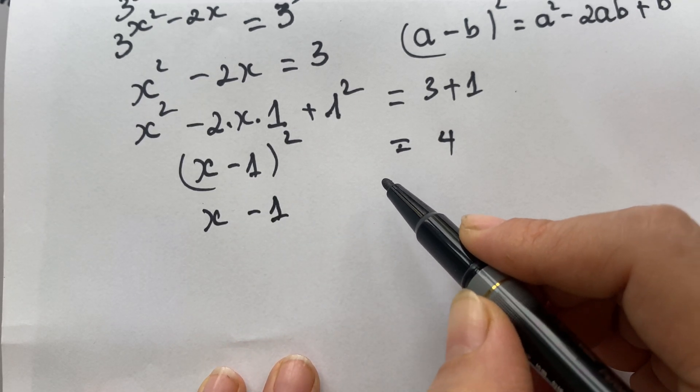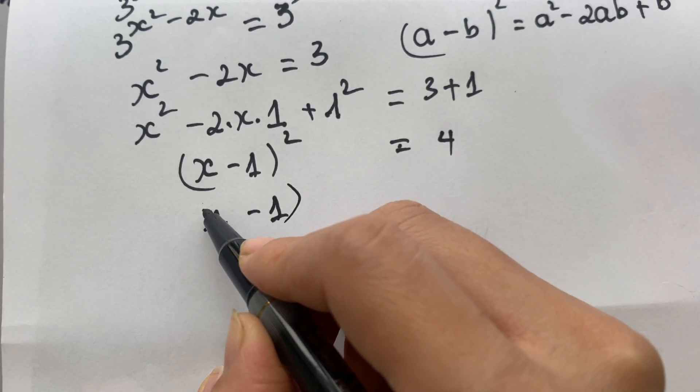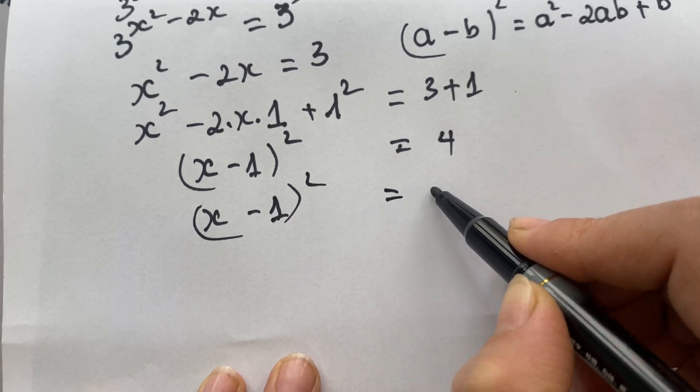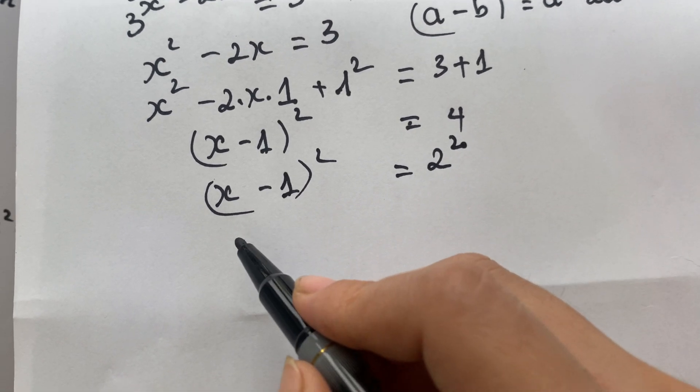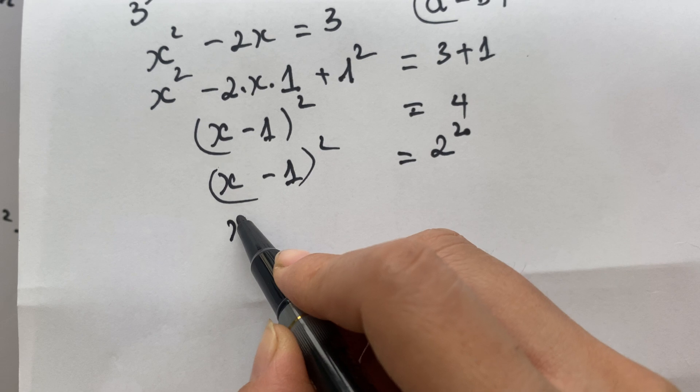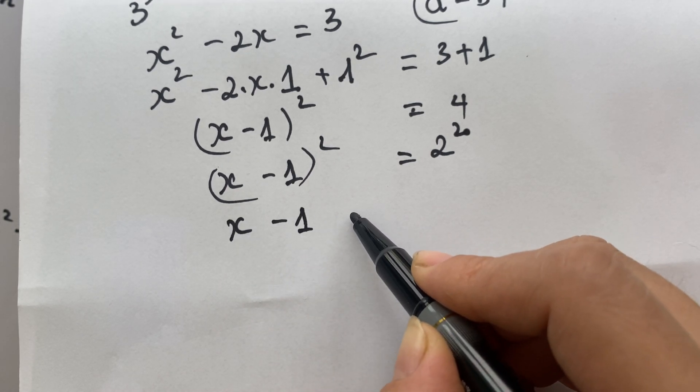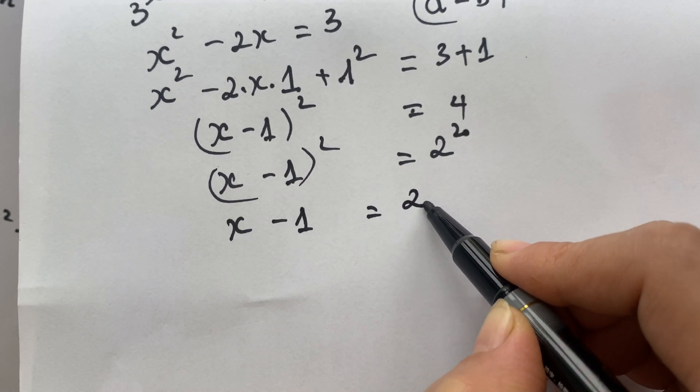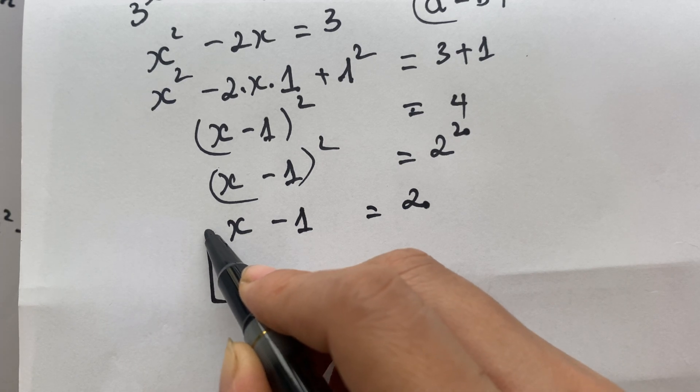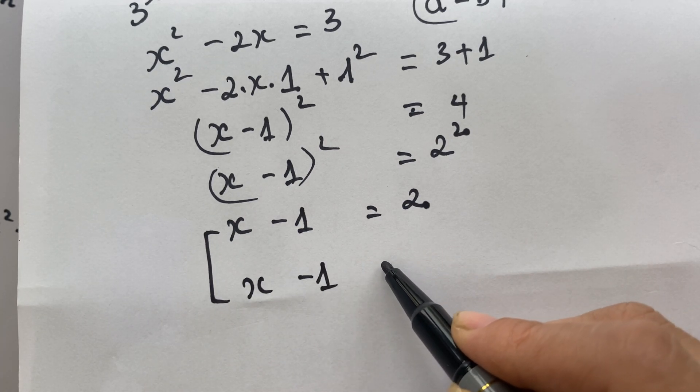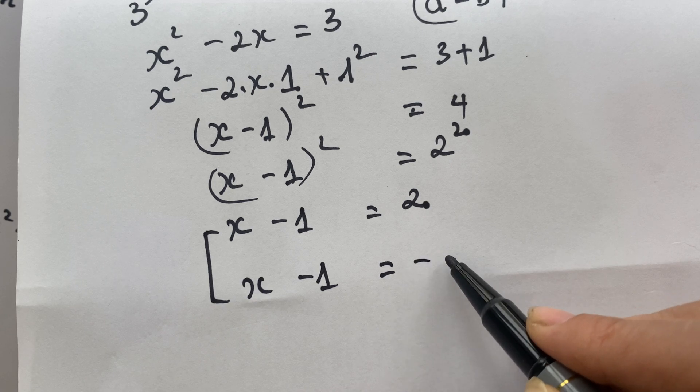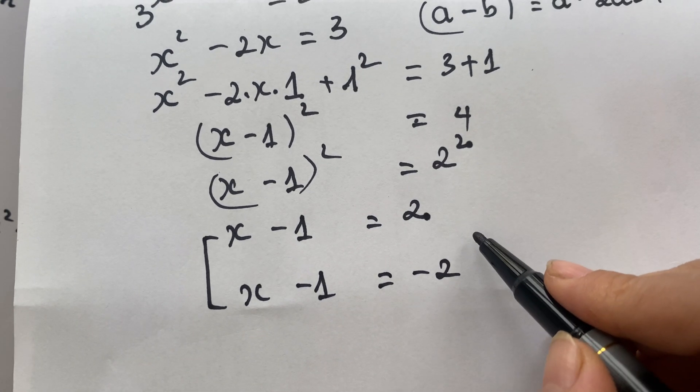x minus 1 square equals 2 square. Therefore we have x minus 1 equals 2, or x minus 1 equals minus 2, right?